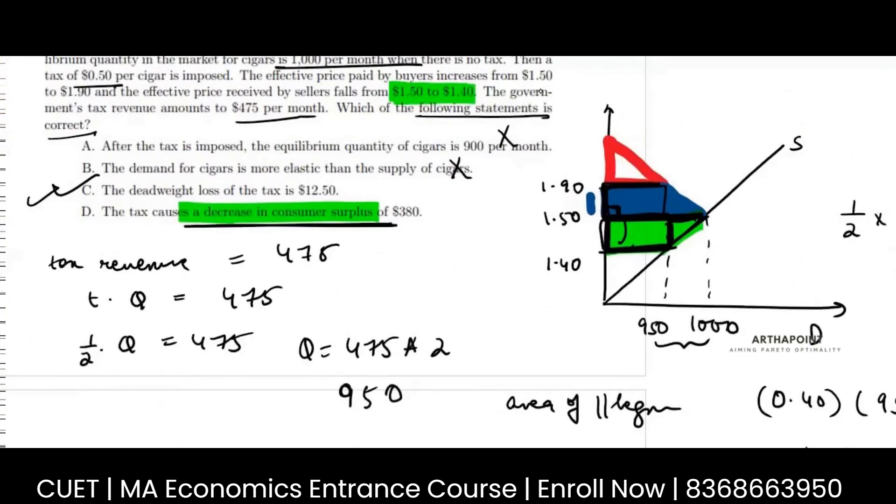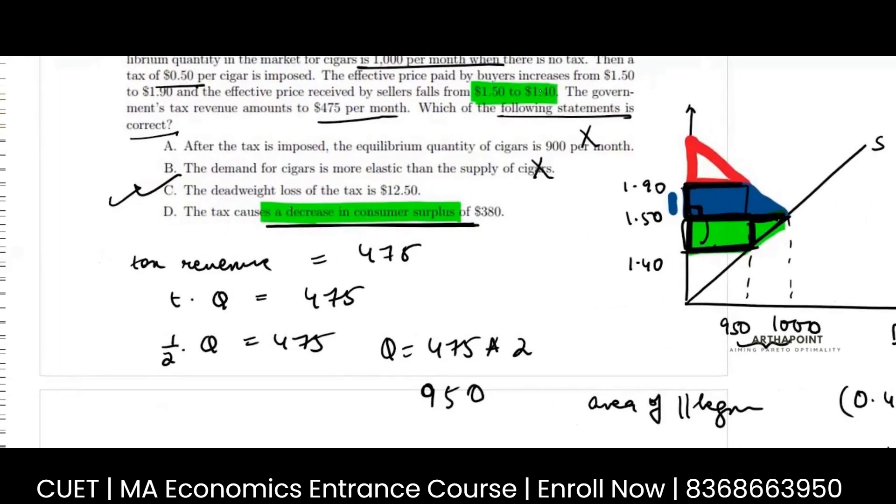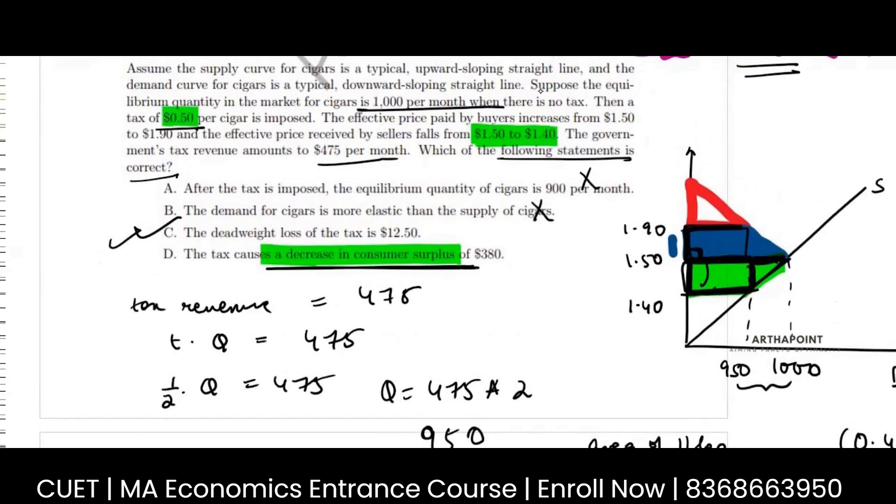The B part. The demand for cigarettes is more elastic than the supply of cigarettes. So whichever party has more elastic part will bear less burden. If you notice from the tax of 0.50, the consumer is going ahead - sorry, will bear less burden.